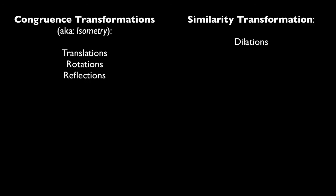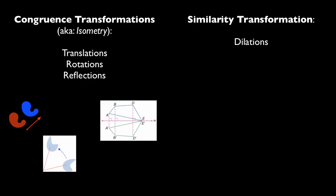Then we have congruence transformations, right? The translations, rotations, reflections, those are all congruence transformations because they preserve distances, they preserve lengths. In other words, the preimage and image are always congruent to each other,